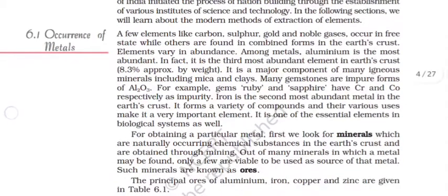Occurrence of metals. A few metals like carbon, sulfur, gold and noble gases occur in free state, while others are found in combined form in the Earth's crust. Elements vary in abundance. Among metals, aluminum is the most abundant. In fact, it is the third most abundant element in the Earth's crust.